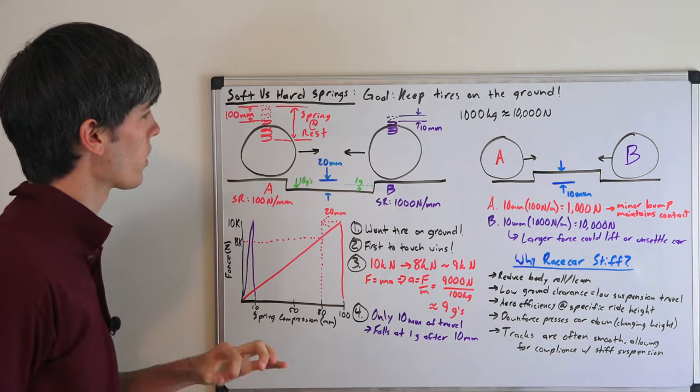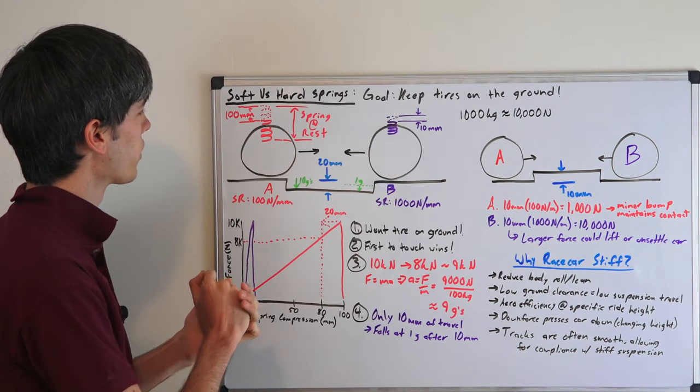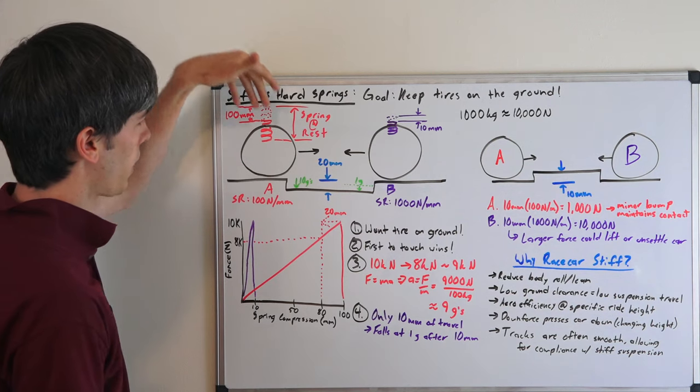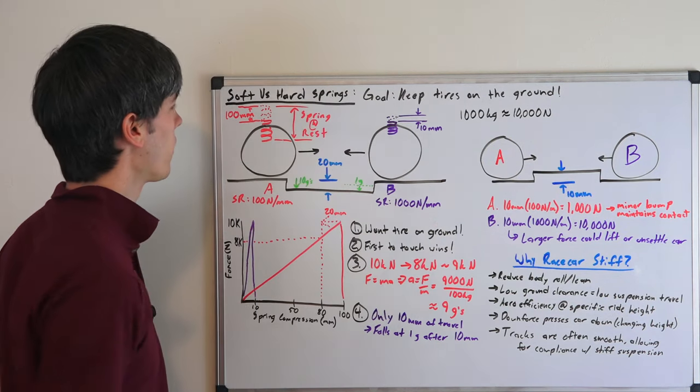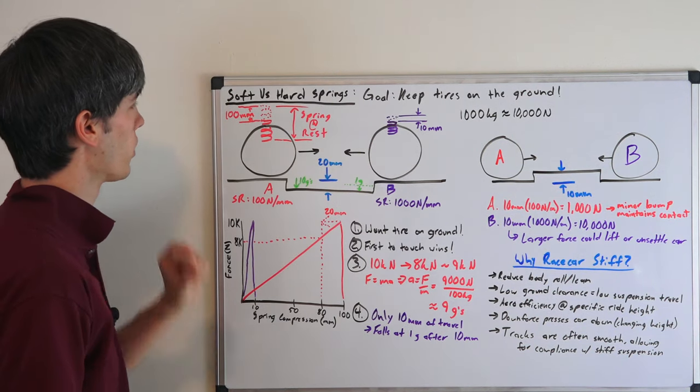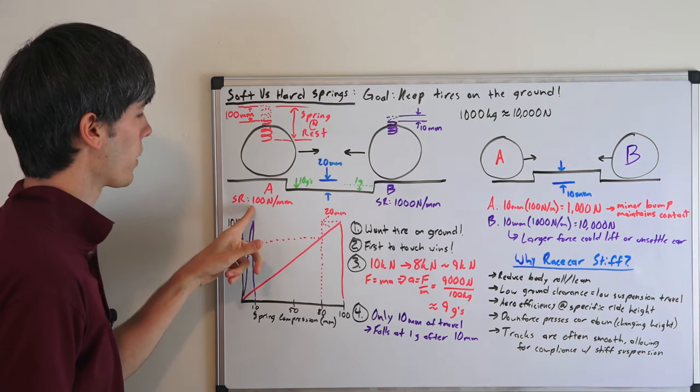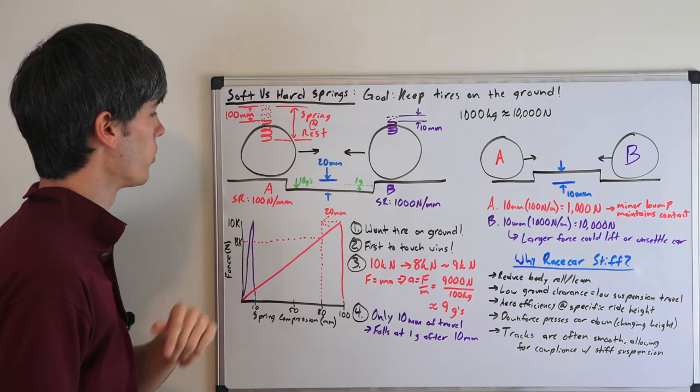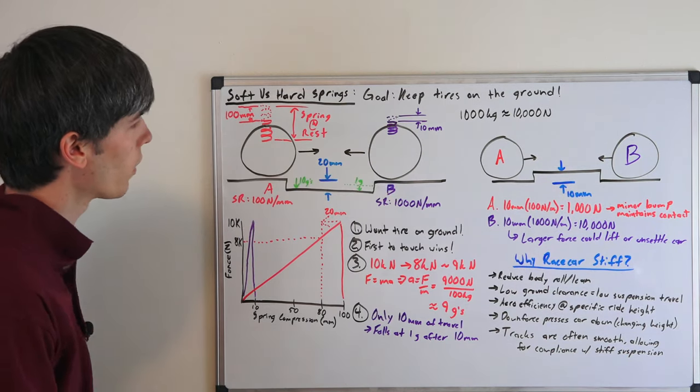Now the only difference between these two vehicles is the spring rate. And so what we have on the left side is a spring and we placed a thousand kilograms on it or about 10,000 newtons of force down on this spring and that compressed it a hundred millimeters. So that gives us a spring rate of a hundred newtons per millimeter.